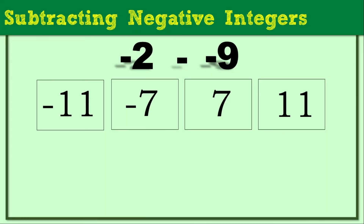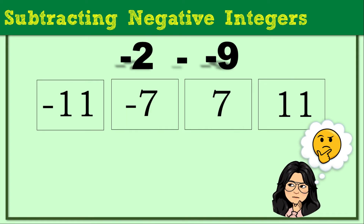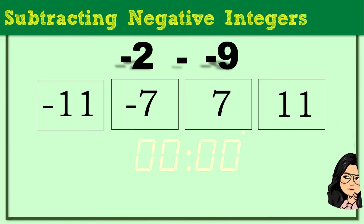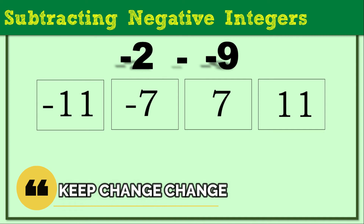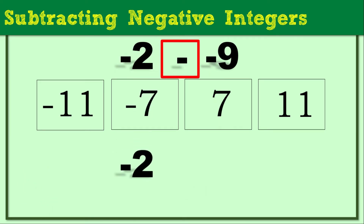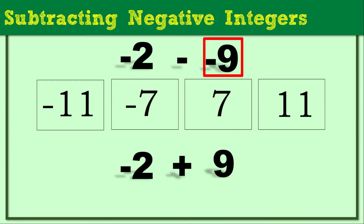How about negative 2 minus negative 9? Using Keep, Change, Change: we keep negative 2, change the minus to plus, and change negative 9 to positive 9. So we now have negative 2 plus 9. Recalling the rules of adding integers, the right answer is positive 7.